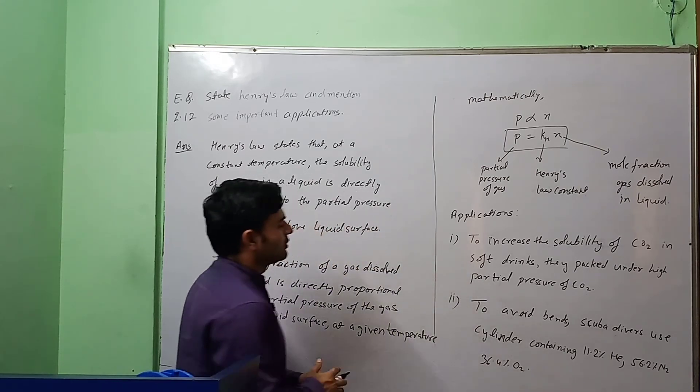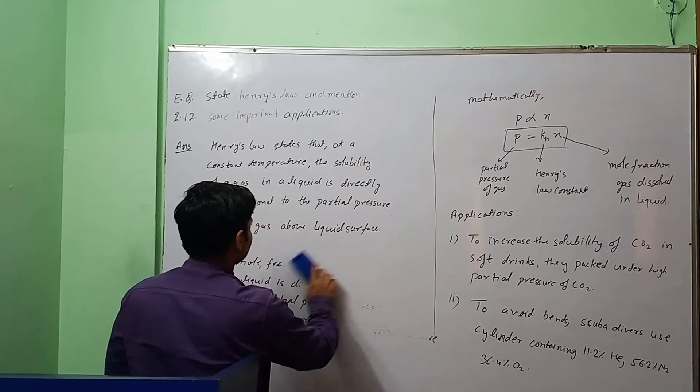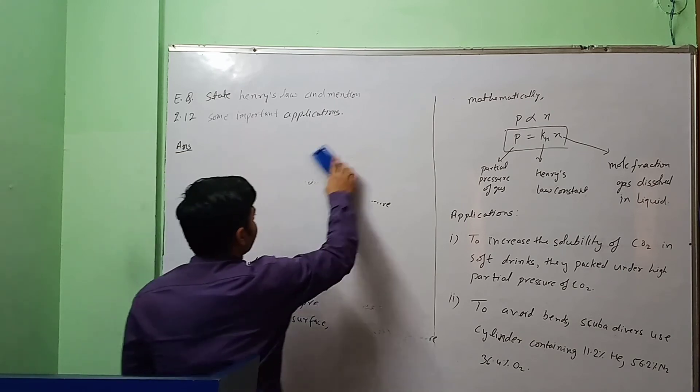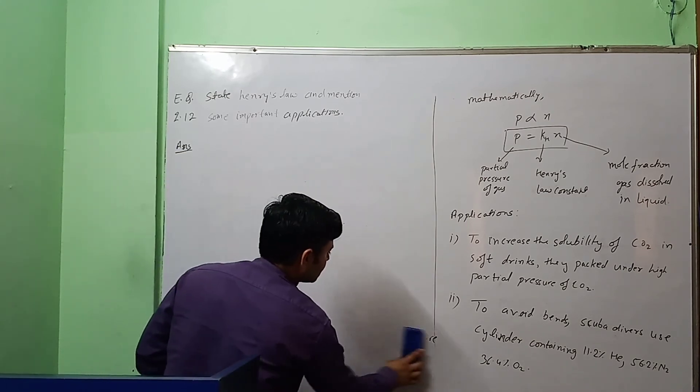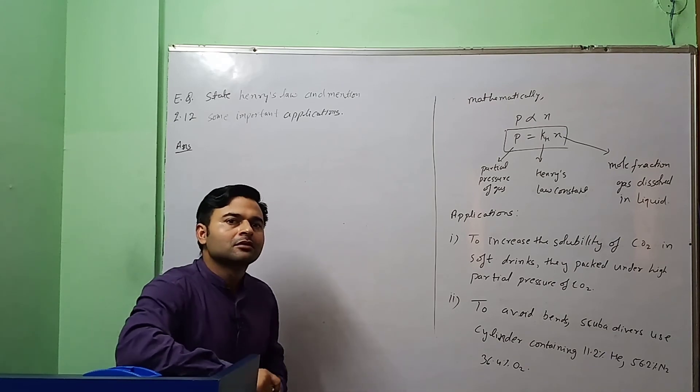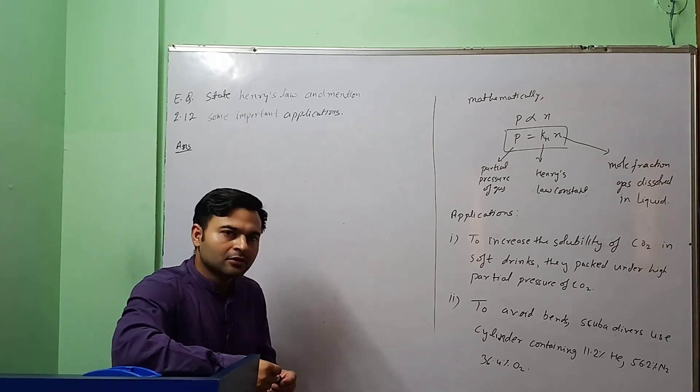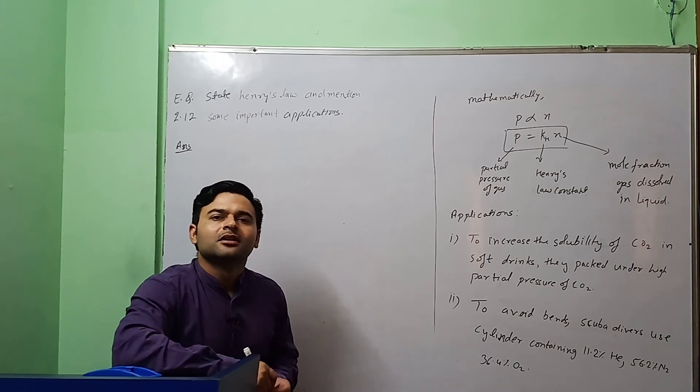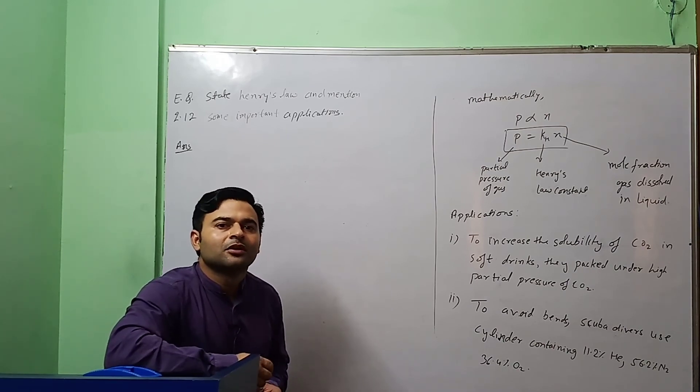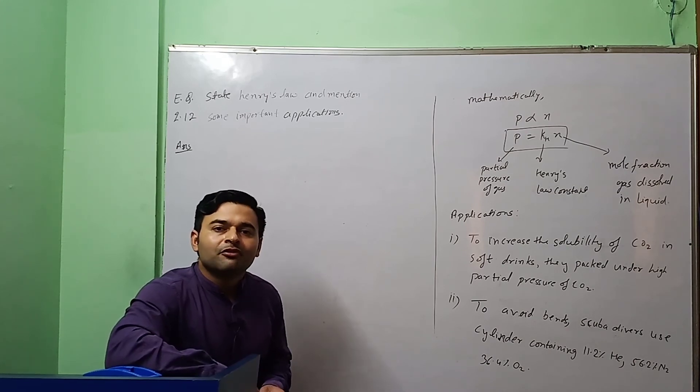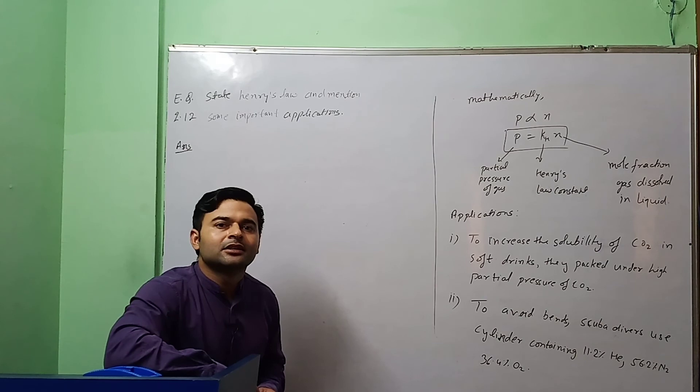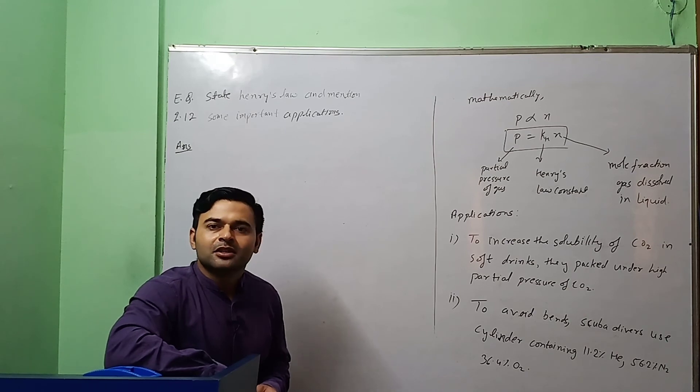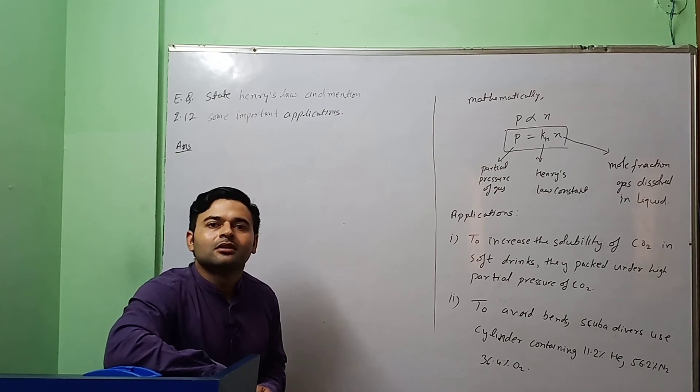Next application is: for the people living at high altitude or the mountain climbers, they take oxygen cylinders with them. Why? Because the availability of oxygen is less at high altitude because the partial pressure or the atmospheric pressure is less, and the partial pressure of oxygen is also less, so less oxygen is available for respiration.